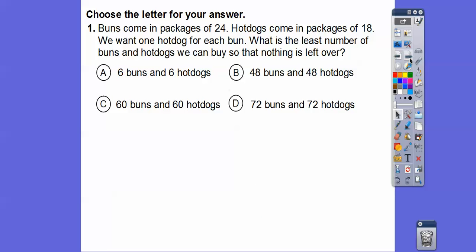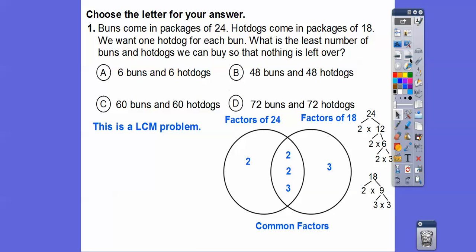All right. Here's some multiple choice. Buns come in packages of 24. Hot dogs come in packages of 18. We want a hot dog for each bun. What is the least number of buns and hot dogs we can buy so that nothing is left over? This one's a least common multiple problem. So I'm going to do Venn diagrams. Here's factors of 24, here's factors of 18. So the least common multiple is the product of all of these numbers. So we're going to multiply all those numbers together and we get 72. So there's going to be 72 buns and 72 hot dogs.